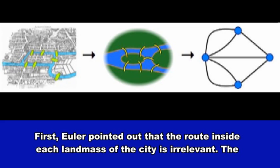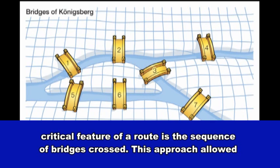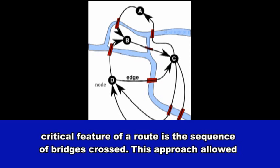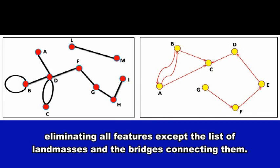First, Euler pointed out that the route inside each landmass of the city is irrelevant. The critical feature of a route is the sequence of bridges crossed. This approach allowed Euler to reformulate the problem in abstract terms, laying the foundations for graph theory, eliminating all features except the list of landmasses and the bridges connecting them.